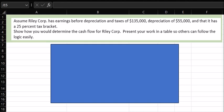Let's explore this determination of cash flow. I'm going to read right from here. Assume Riley Corporation has earnings before depreciation and taxes of $135,000, depreciation of $55,000, and that it has a 25% tax bracket.